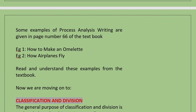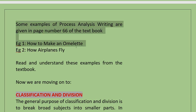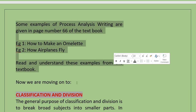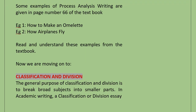Some examples of Process Analysis writing are given on page number 66 of your textbook. For example, how to make an omelet, or how airplanes fly. Read and understand these examples from the textbook in order to understand more about these categories.